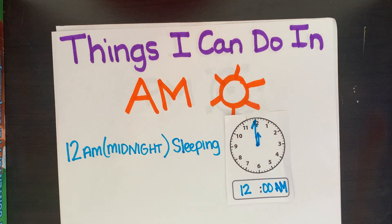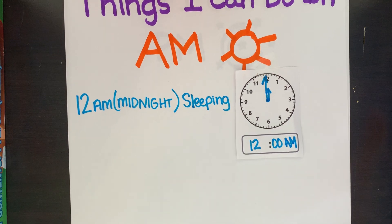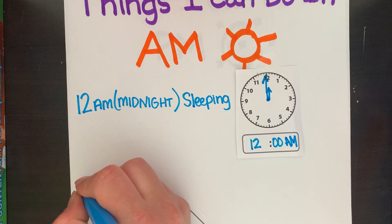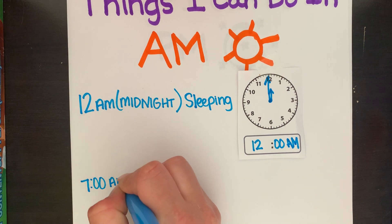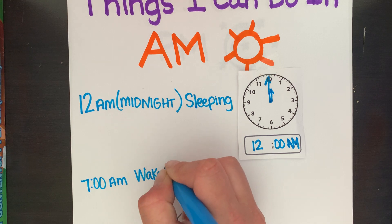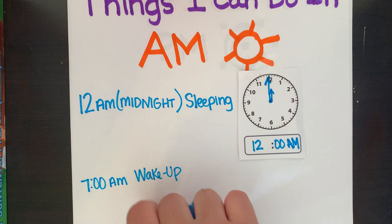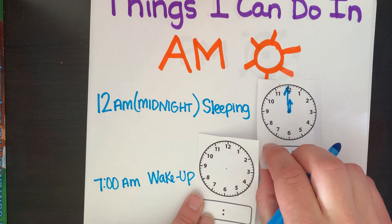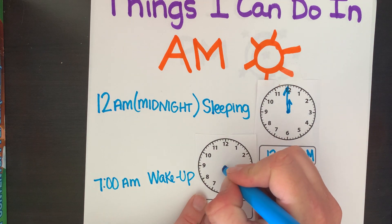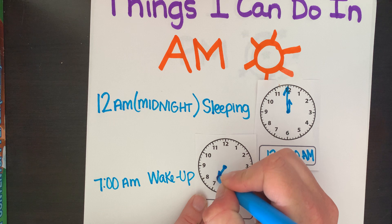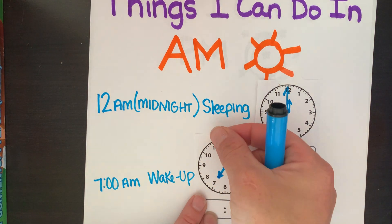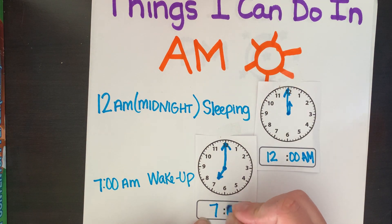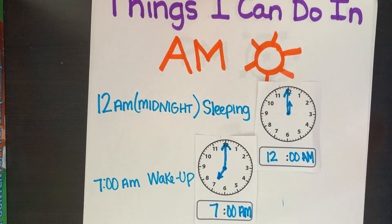So one o'clock a.m., two o'clock a.m., three o'clock — you're still probably snoring away. I'll probably start to wake up around 7 a.m. This is when I wake up. On a clock, that's going to be my little hour hand on the 7 and my long minute hand up on the 12. So at 7 o'clock a.m., I'm just waking up.